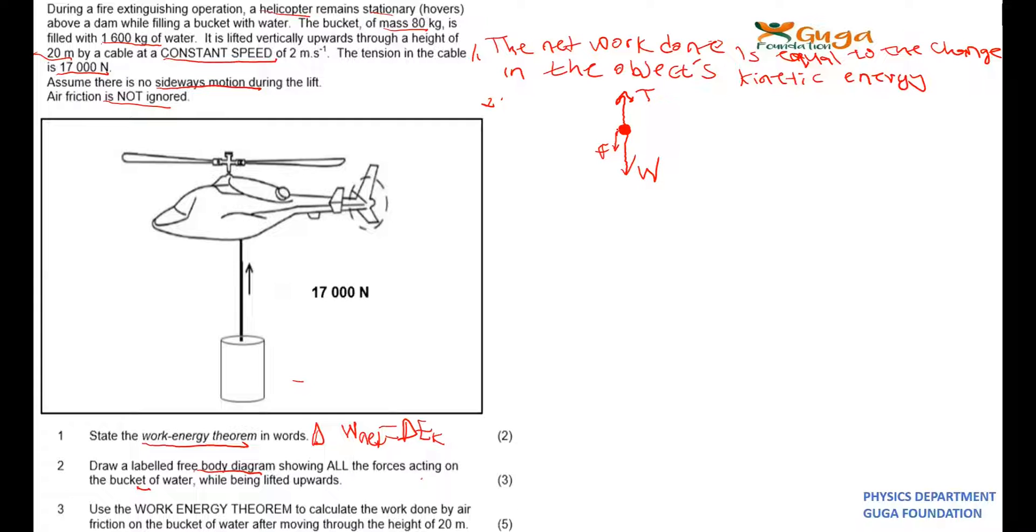On number three, it says to use the work-energy theorem to calculate the work done by friction on the bucket moving through the height of 20 meters. So now we can start with our golden formula.